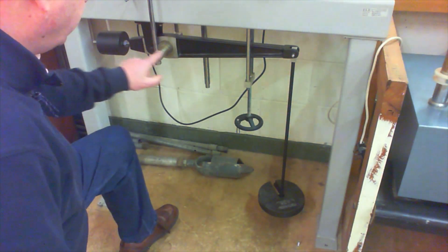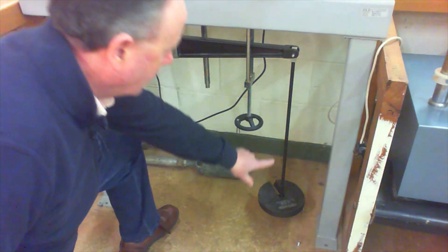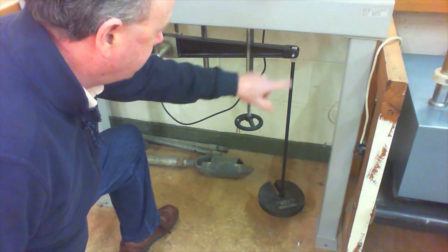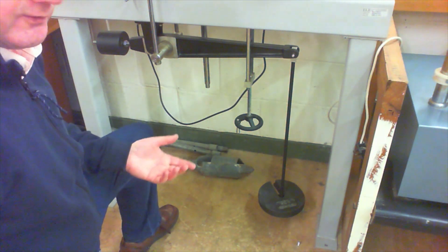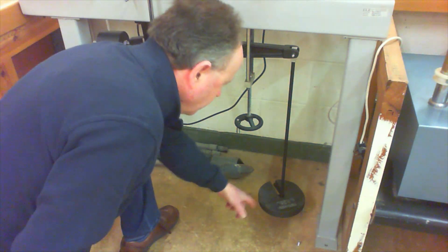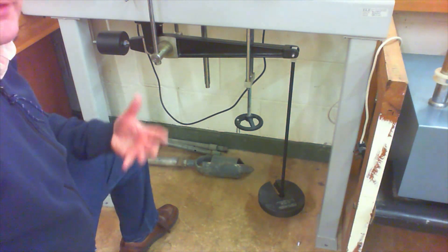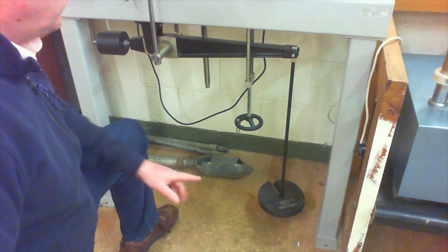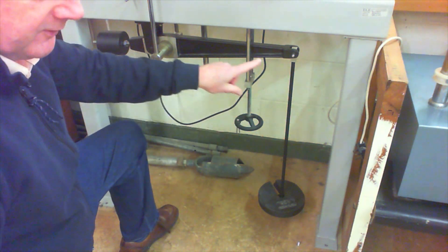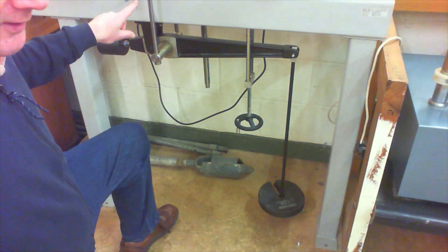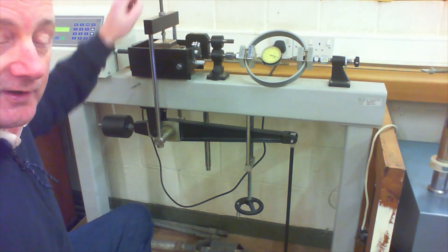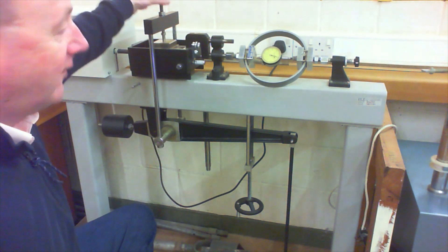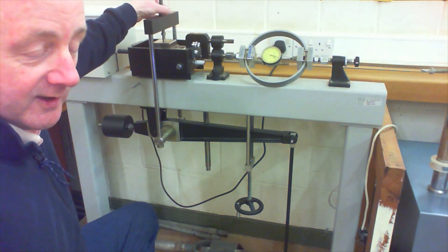We have a loading arrangement. This is a lever arm loading arrangement, loading arm here, and it multiplies the weight at the end by a factor of 10. So I've put two 2kg weights on there, that's 4kg. By the time that is multiplied up through the lever arm and onto our sample, up here, that's multiplied by 10 times, so it's equivalent to 40kg on top of the sample.